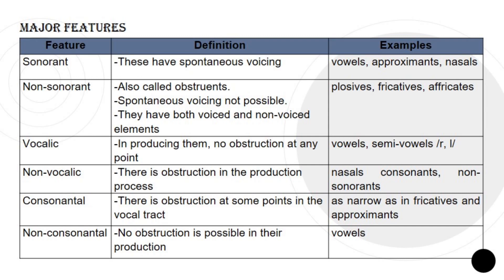Let's start with sonorant. Sonorants have spontaneous voicing, and examples are vowels, approximants, and nasals. Non-sonorants are also called obstruents. Spontaneous voicing is not possible, and they have both voiced and non-voiced elements. Examples include plosives, fricatives, and affricates.